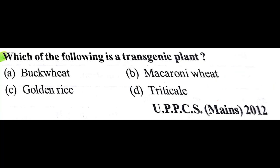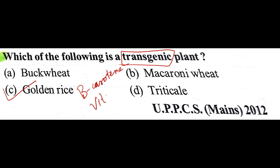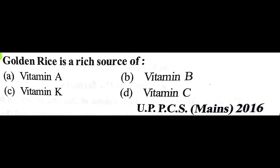Which of the following is a transgenic plant? The answer is C: golden rice. In transgenic plants we insert a gene to fortify the plant. In golden rice, the plant is fortified with beta-carotene, which in turn is the source of vitamin A. Golden rice is a rich source of vitamin A.